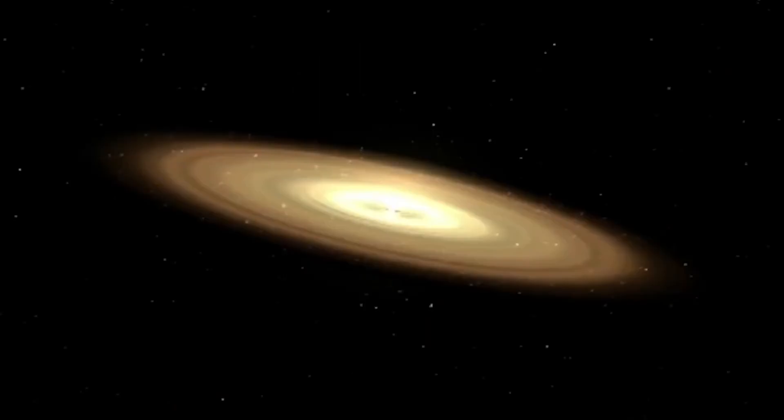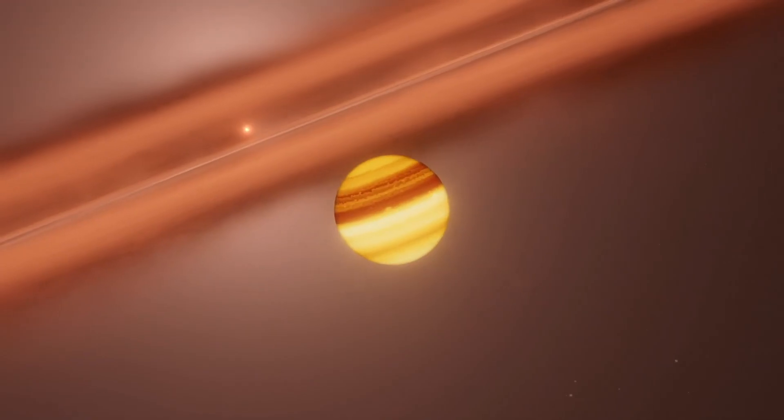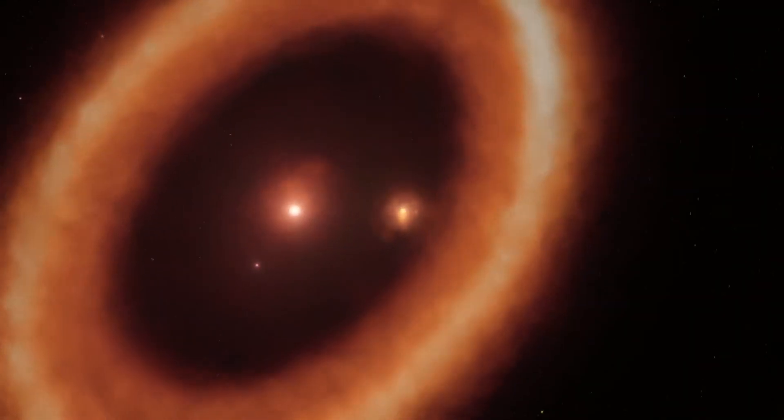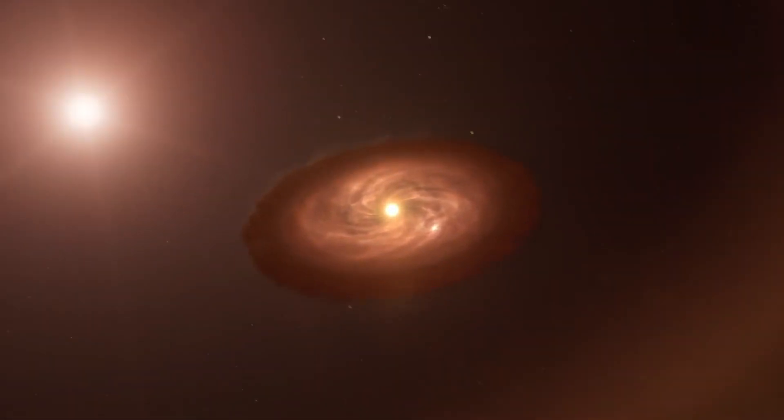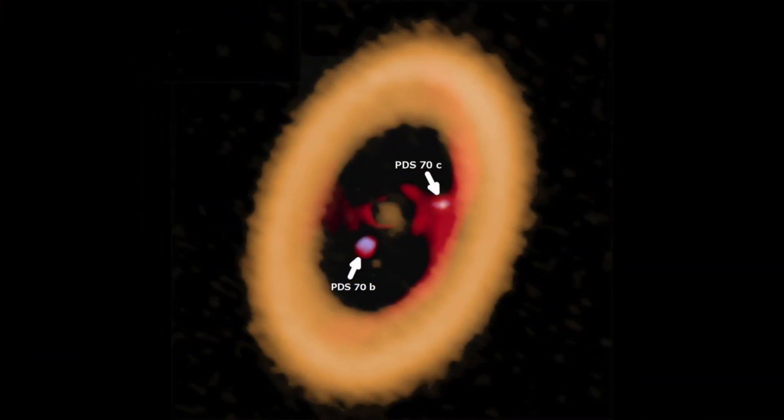Their estimated mass, if it's correct, is actually surprisingly small, especially compared to the mass of the planet itself. Such a small circumplanetary disk to planet mass ratio would indicate that the planet has already used up most of the material. It is nearing the end of the formation process.